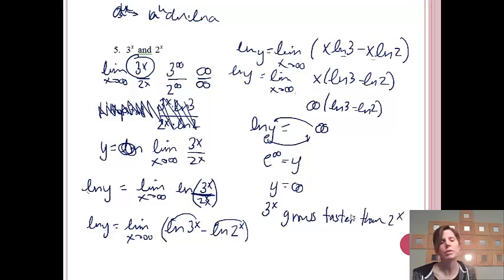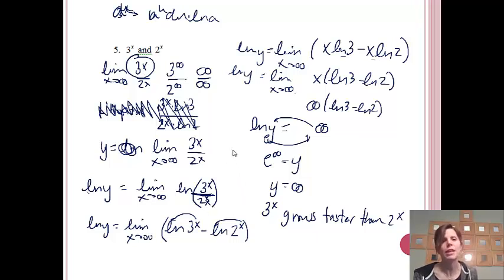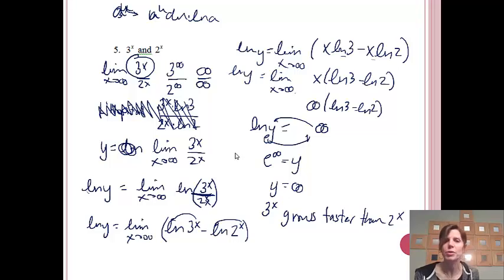That was probably common sense — something that triples grows faster than something that doubles — but now we've officially proved it using calculus. Hopefully you can now use relative rates of growth to decide which function grows faster relative to another.